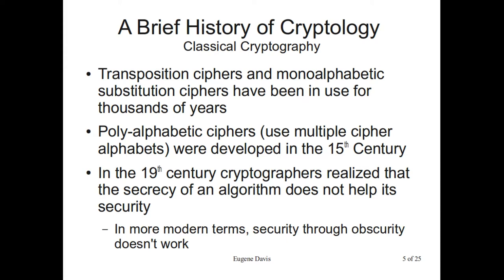One interesting side note: in the 9th century, one of the Arab empires was actually really advanced comparatively speaking in encryption — they were using polyalphabetic ciphers, which is where you have multiple cipher alphabets. The interesting thing is, two or three hundred years later, they had lost even the ability to break a simple transposition or substitution cipher.